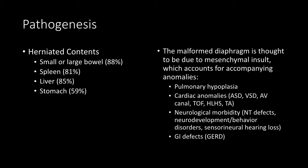In terms of what is protruding through these defects, they are abdominal contents making their way into the thoracic cavity. The most common of which is the small or large bowel, but the spleen and the liver are also commonly involved. The stomach can also make its way into the thoracic cavity.